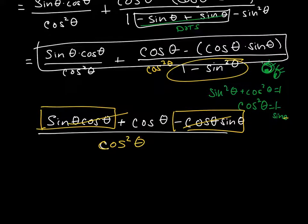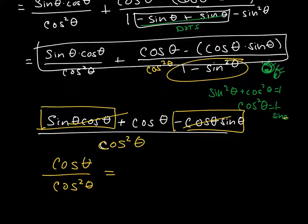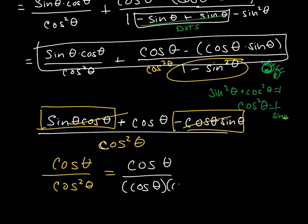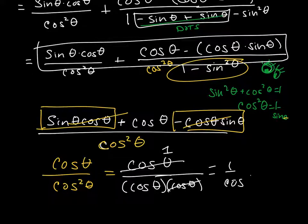Finally, I'm left with cosine of theta over cosine squared of theta. Remember, cosine squared means cosine of theta times cosine of theta, and one cosine cancels, leaving 1 over cosine of theta, which is the secant of theta.